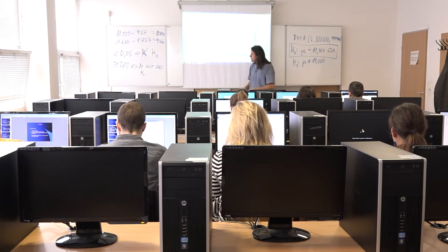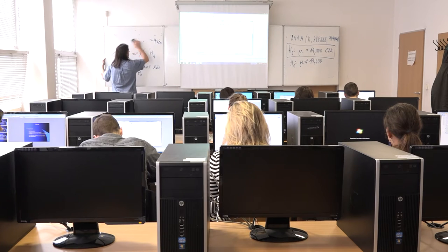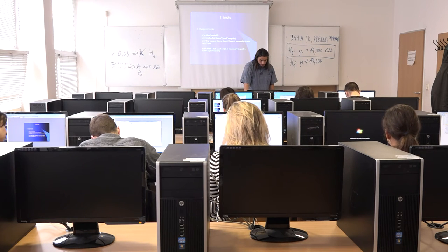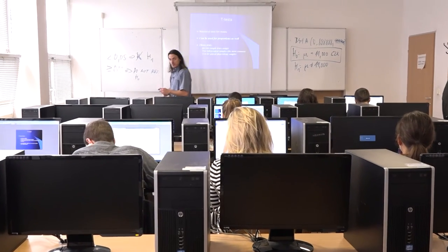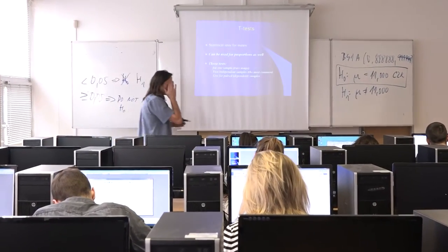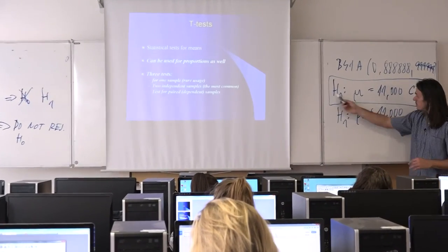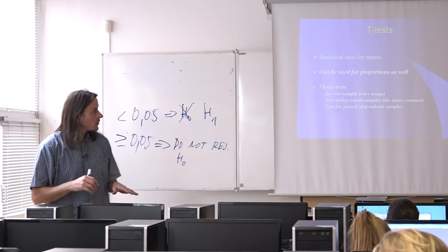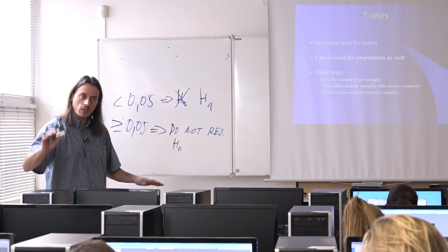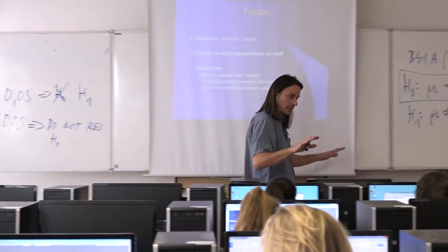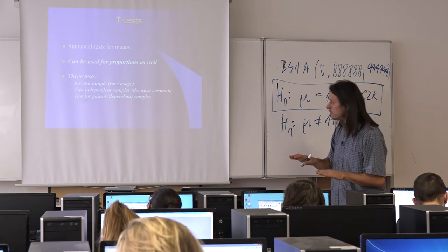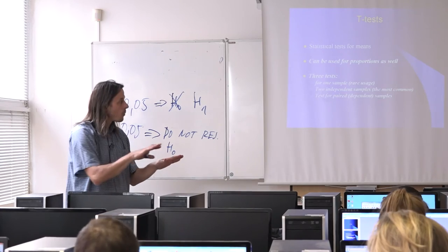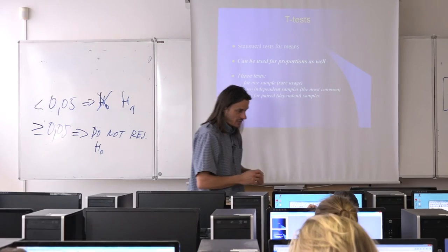Now we move to the second T-test: two independent samples T-test. Instead of comparing our data to some expected value for the whole population, we compare two independent groups and ask whether, for the whole population, the averages for both groups can be different or not. We are generalizing from two samples. This is the most common T-test in statistics and data analysis.